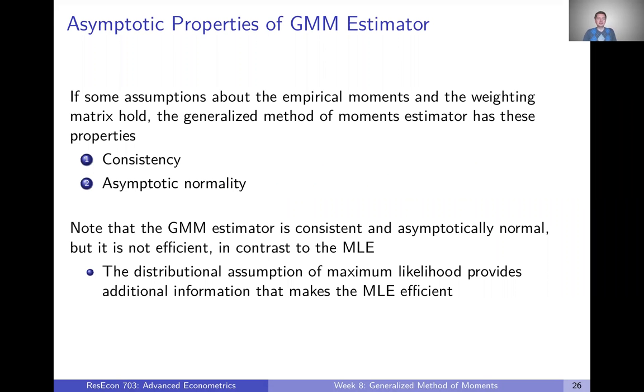If some assumptions about our empirical moments and our weighting matrix hold, then the GMM estimator is both consistent and asymptotically normal. There's one property missing from this list that we might really want, and that is efficient. If we remember back to the maximum likelihood estimator, we said that it achieved the Cramer-Rao lower bound and was efficient among all consistent estimators. That's not generally going to be the case with the GMM estimator.